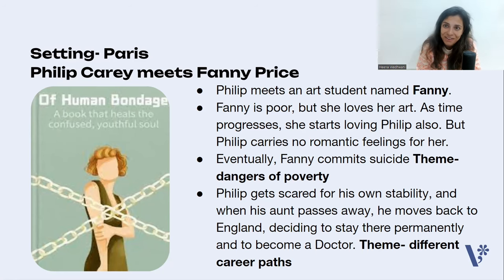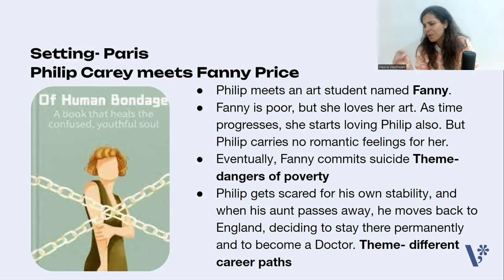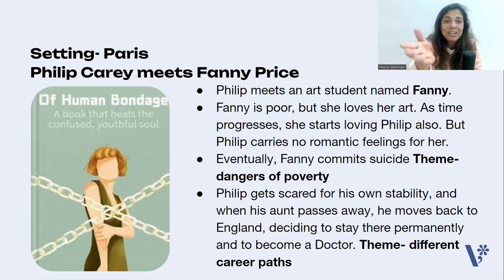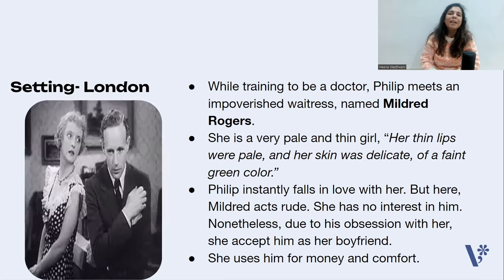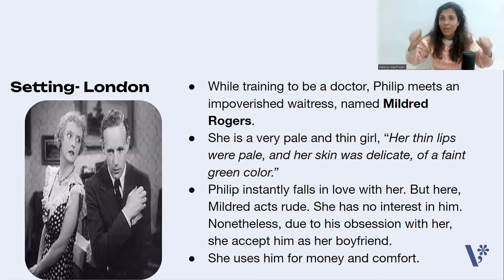Philip enters medical training — the theme here is different career paths and confusion. As the narrator notes, it happens to all of us: as a child you want to become an actor, then a doctor, then a psychologist. That is what's happening with Philip Carey. Now he wants to become a doctor. Setting: London. While training to be a doctor, Philip meets an impoverished waitress named Mildred Rogers — she can be called the second most important character and effectively the antagonist of Of Human Bondage.